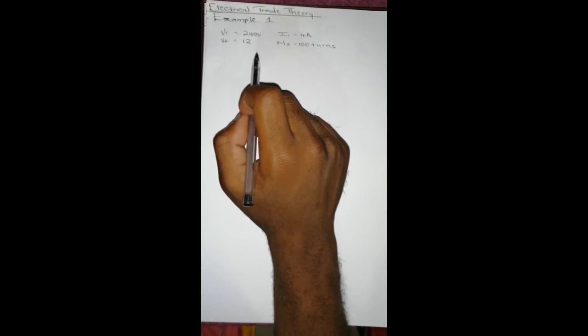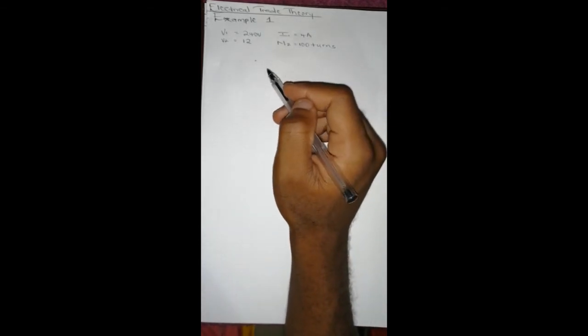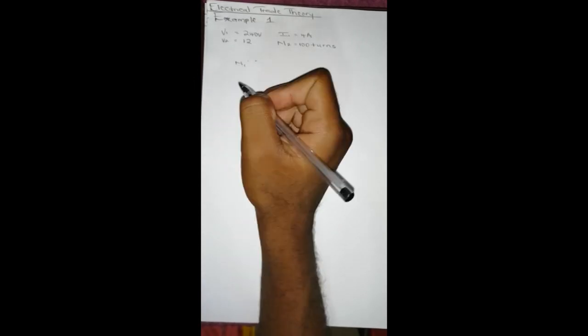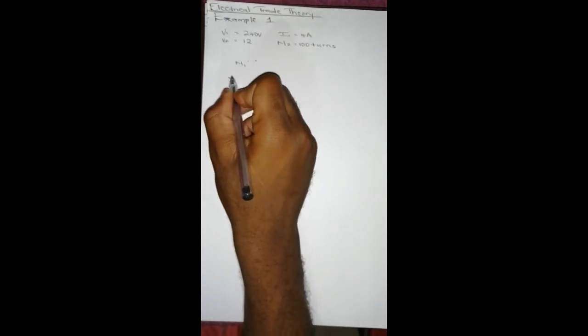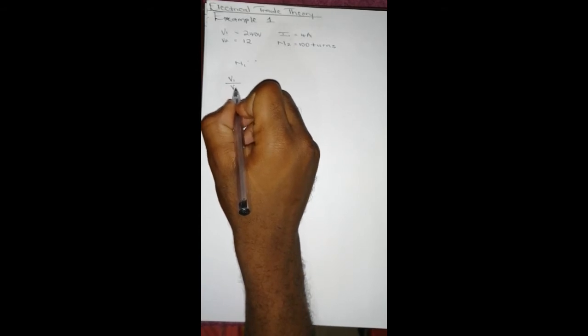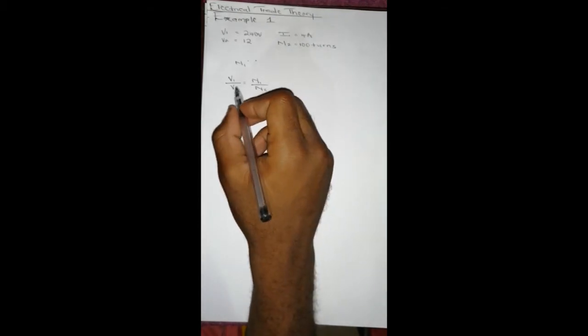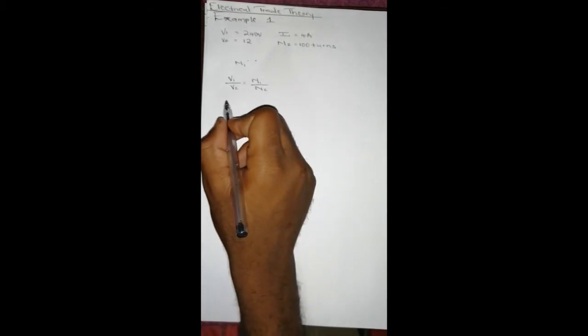Then the first question says calculate the number of turns on the primary side, so we're looking for N1. And we know that from this formula: V1/V2 = N1/N2, we can find N1 because we've got N2, V1, and V2. Making N1 the subject of the formula...